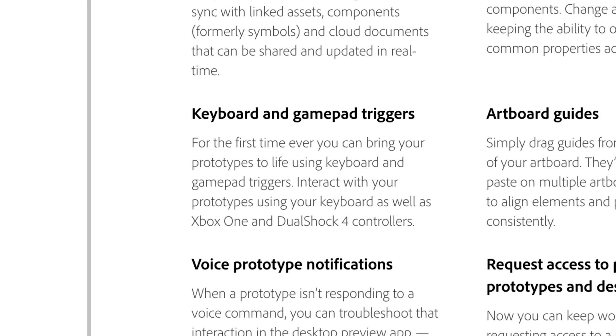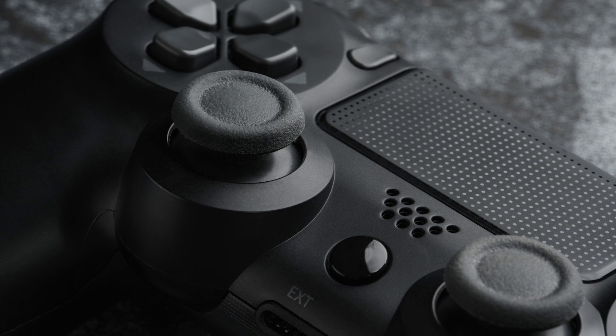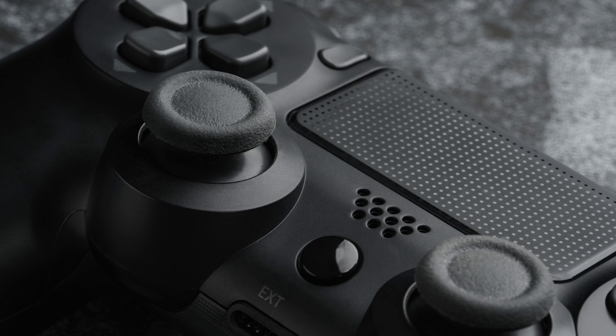Next on the list we have keyboard and gamepad triggers. You can use your keyboard or the gamepad triggers on your Xbox One or PS4 controller to interact with your prototype. So if you're coming up with a game concept or going through a game menu UI, you can actually interact with it using a controller. It makes the prototype feel more believable — you can put it in someone's hands with a real controller and get real feedback on how they find the experience. Personally, as a bit of a gamer, I want to create something that fuses UI design with a game so I can play through it with a controller.